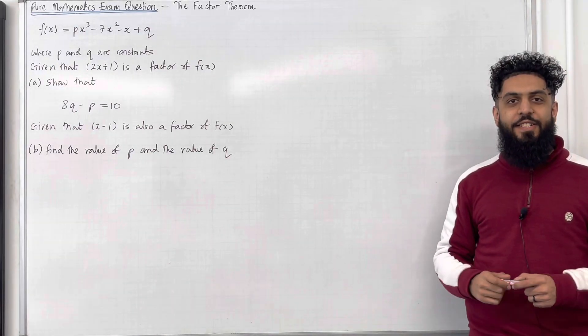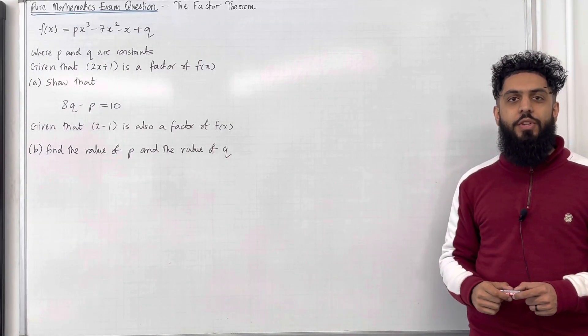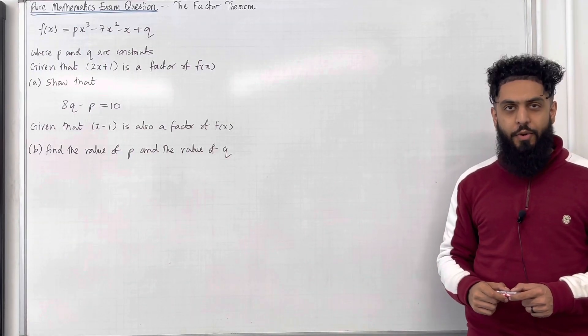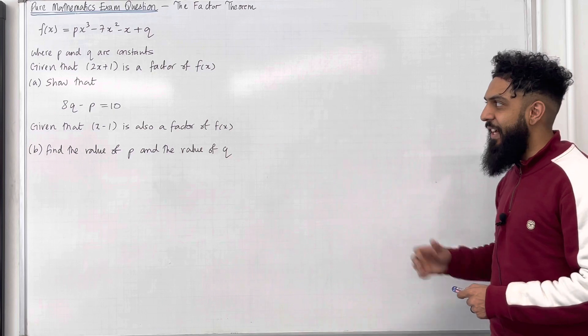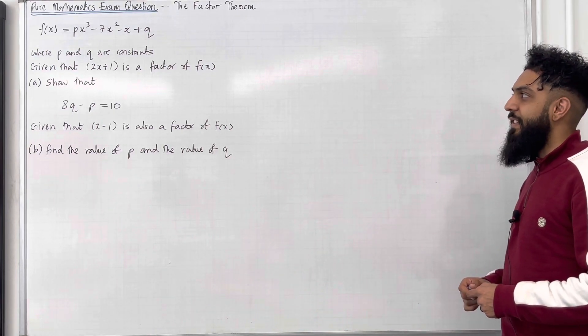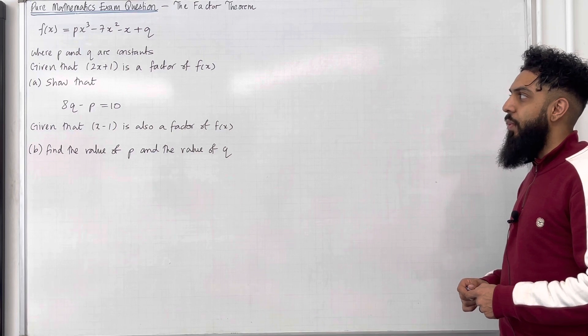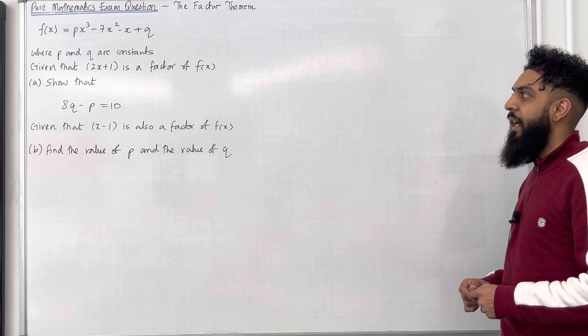Welcome back. In this video, I'm looking at a Pure Mathematics exam question on the factor theorem. Here is the exam question. f of x is equal to px cubed minus 7x squared minus x plus q, where p and q are constants.